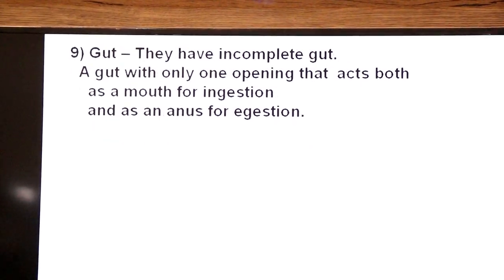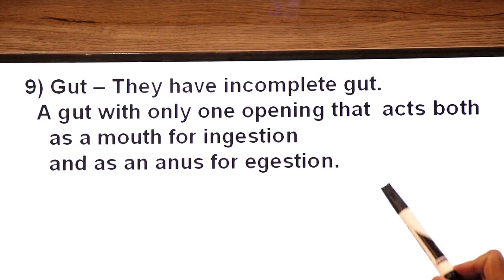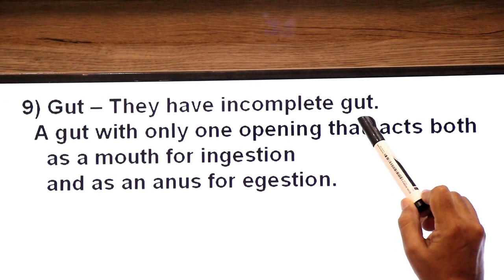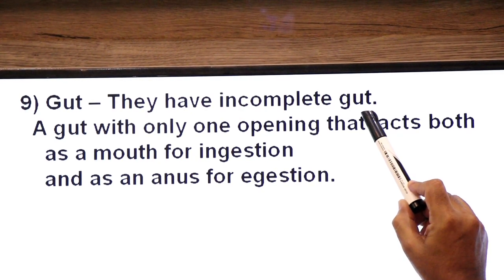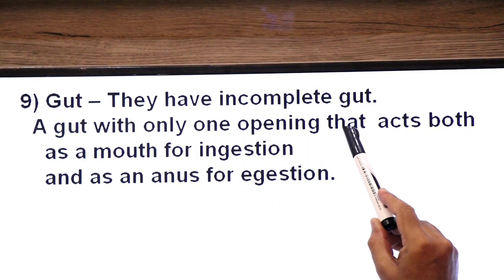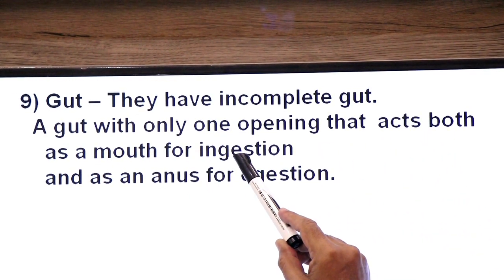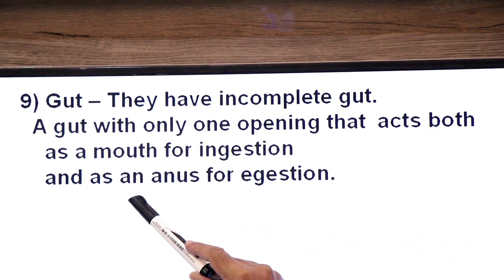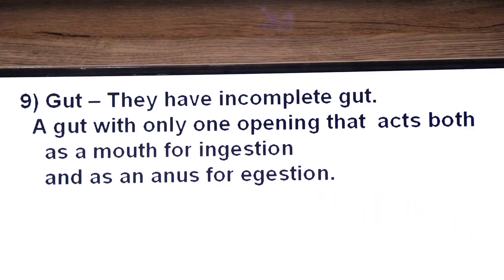Now their gut. Gut means digestive tube. They have an incomplete gut. An incomplete gut is one which has only one opening that acts both as a mouth for ingestion — intake of food — and as an anus for egestion — removal of waste.